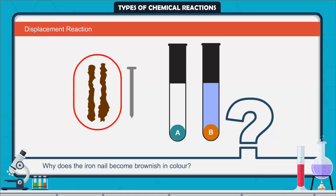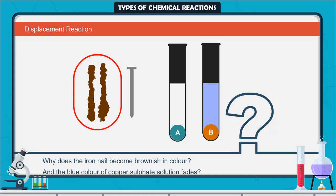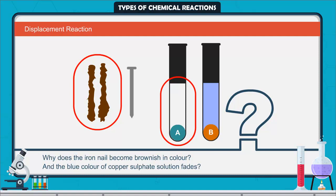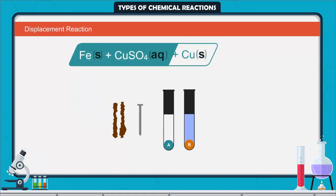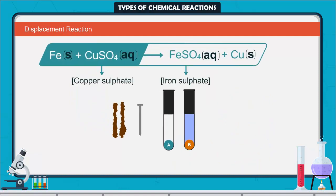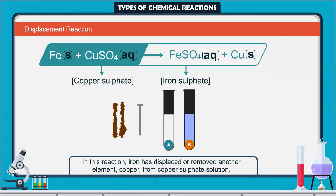Why does the iron nail become brownish in color? And why does the blue color of copper sulfate solution fade? The following chemical reaction takes place in this activity. In this reaction, iron has displaced or removed another element, copper, from copper sulfate solution.